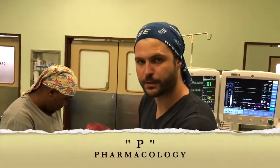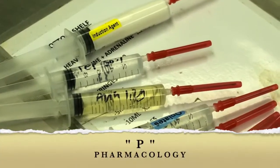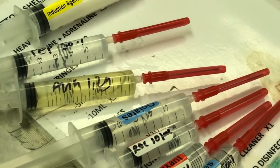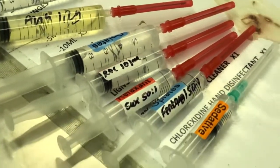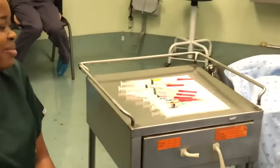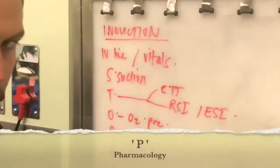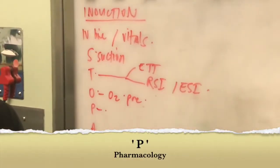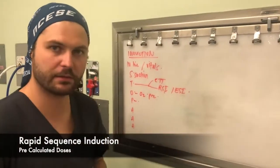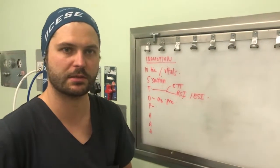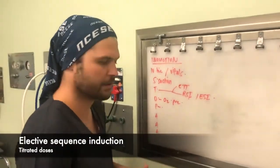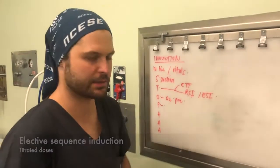Then we come to P, which is pharmacology — pre-calculated doses with a rapid sequence induction. I have a colleague who's going to help me give the drugs. If you're doing a rapid sequence induction, we're going to have pre-calculated doses. And if we're doing an elective sequence induction, then we're going to titrate our induction agent.